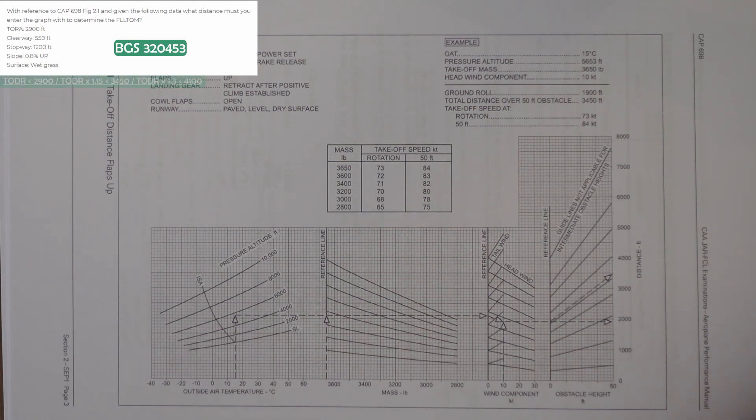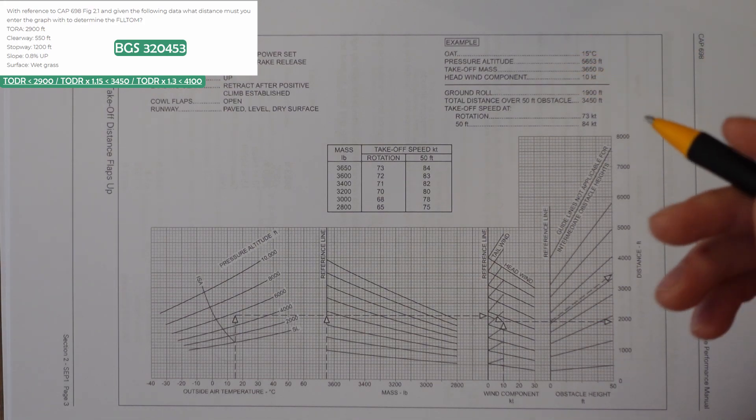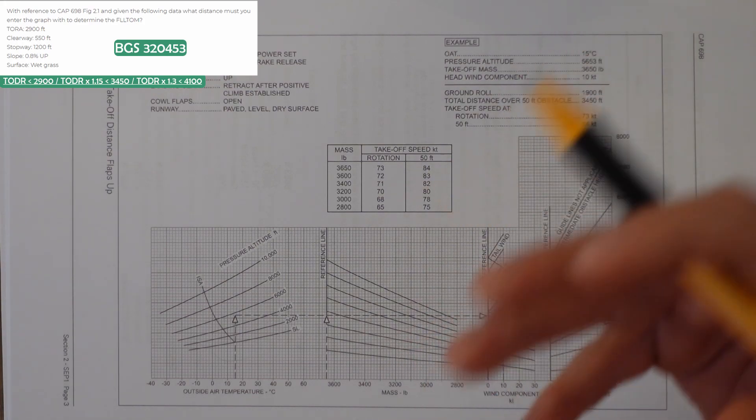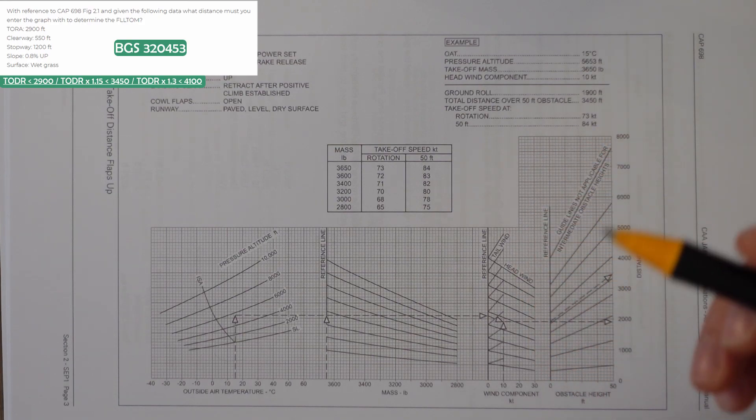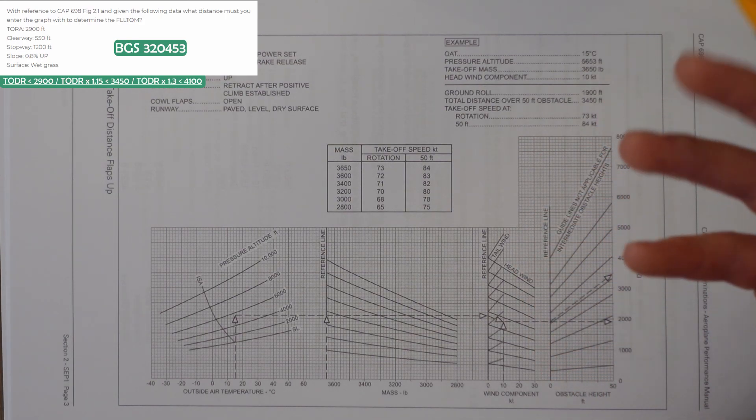The takeoff distance required has to be less than the takeoff run available. The takeoff distance required times 1.15 has to be less than the takeoff distance available. And the takeoff distance required times 1.3 has to be less than the accelerate stop distance available. It's best to lay this out in a little bit of a table.